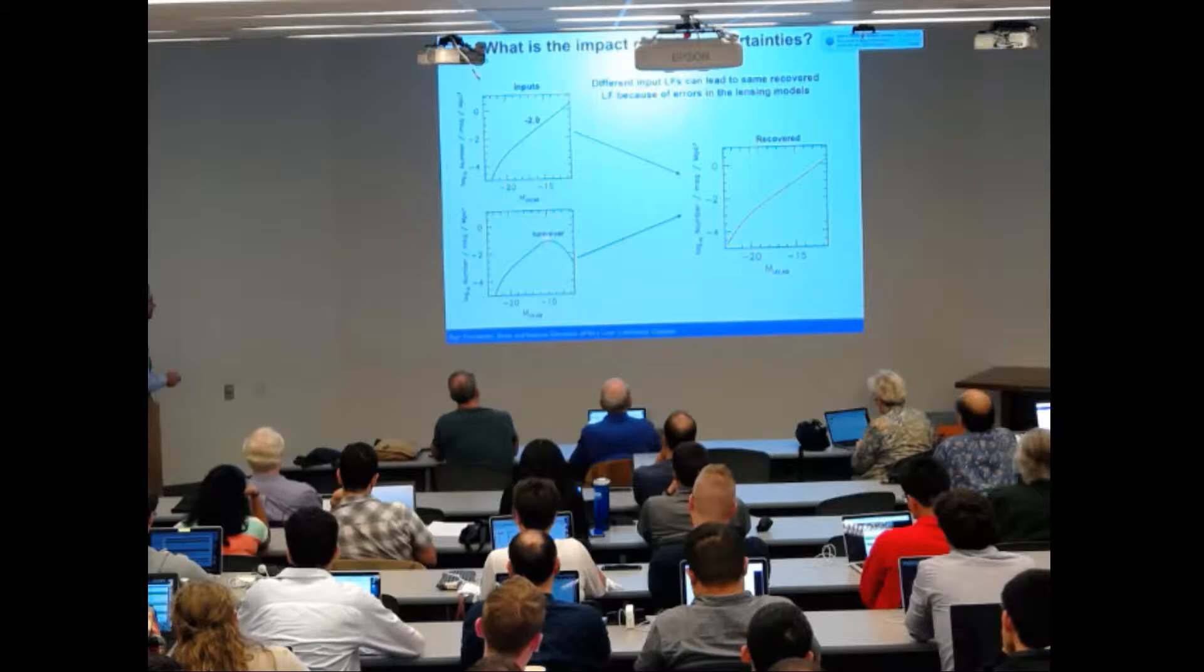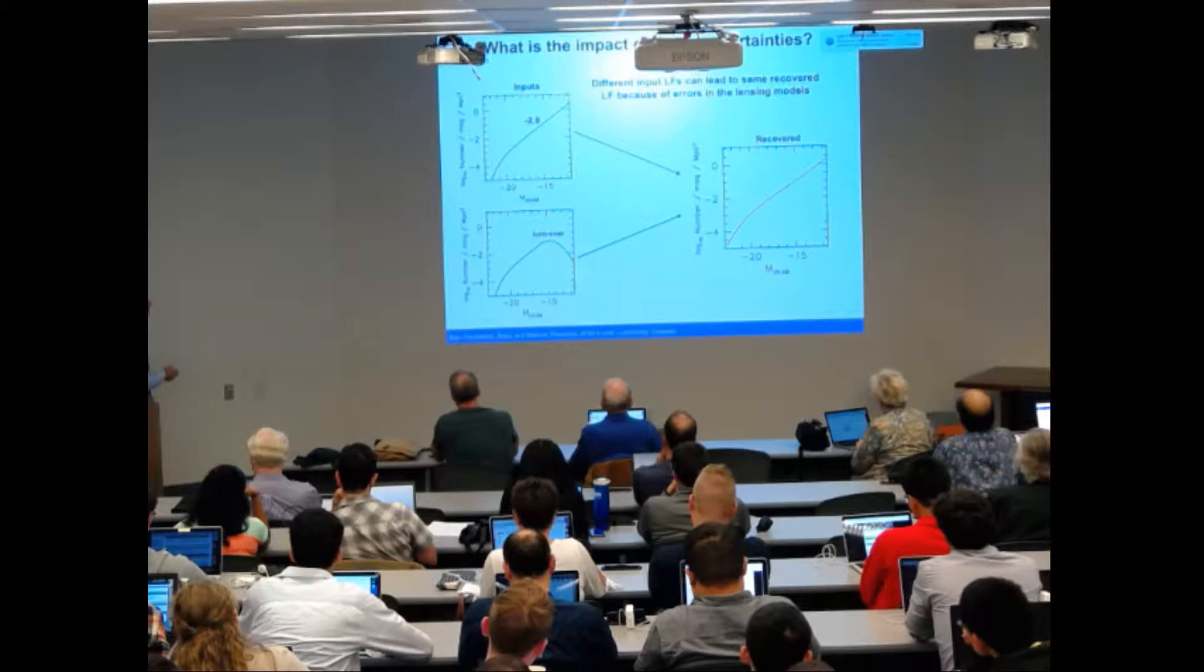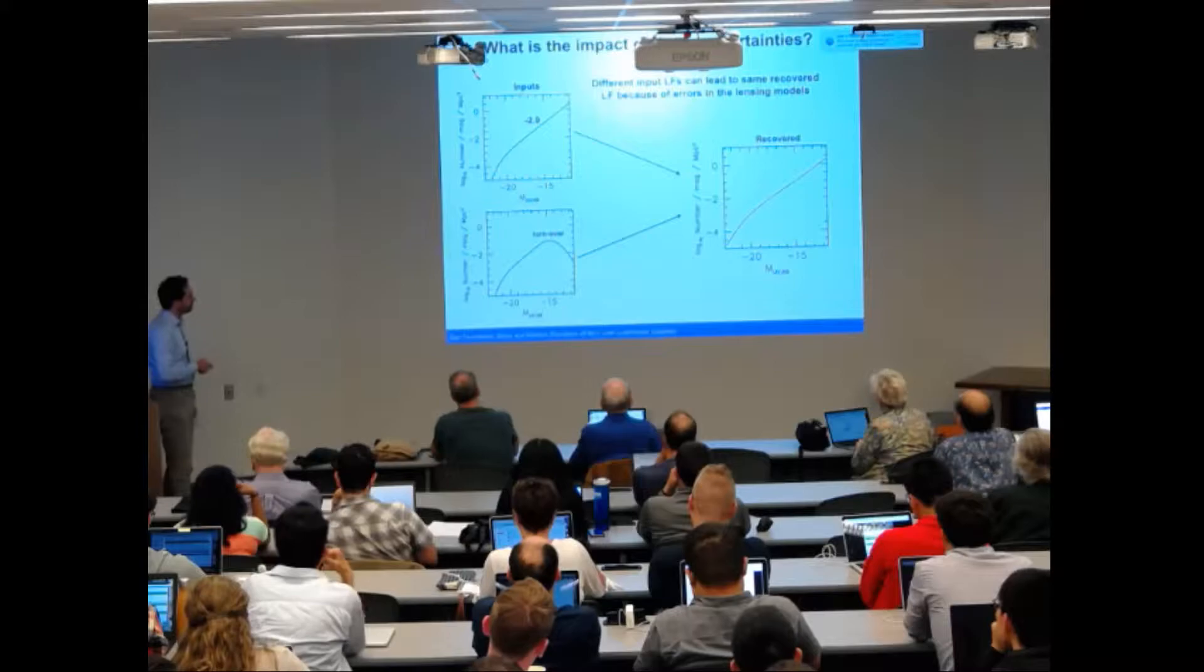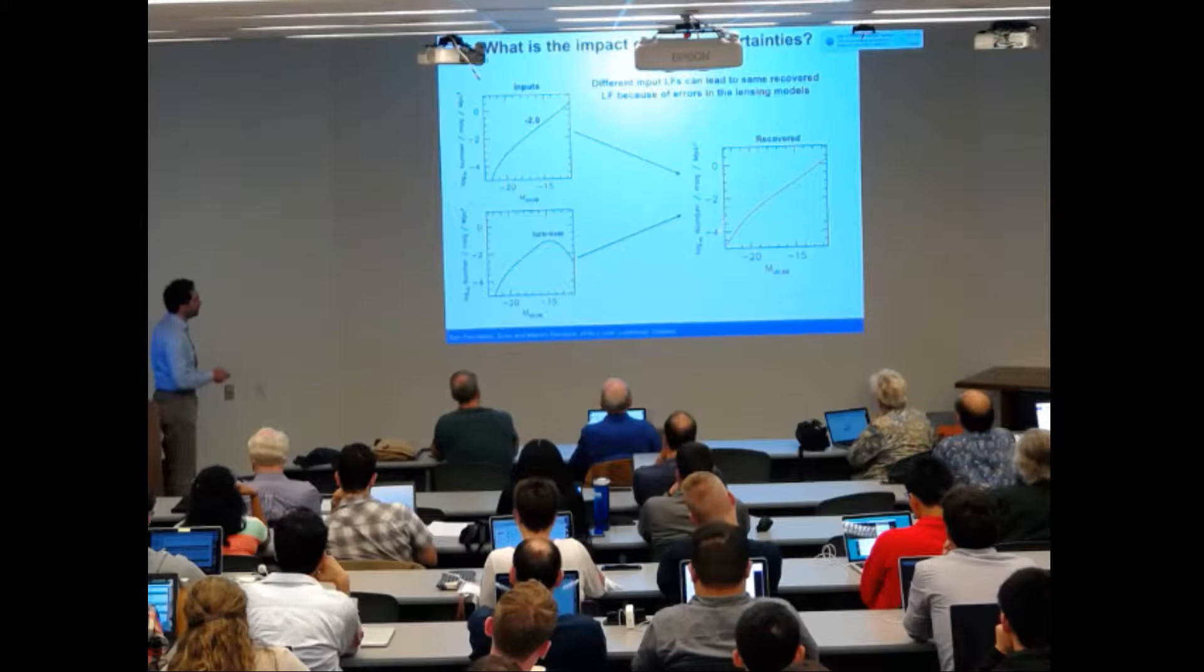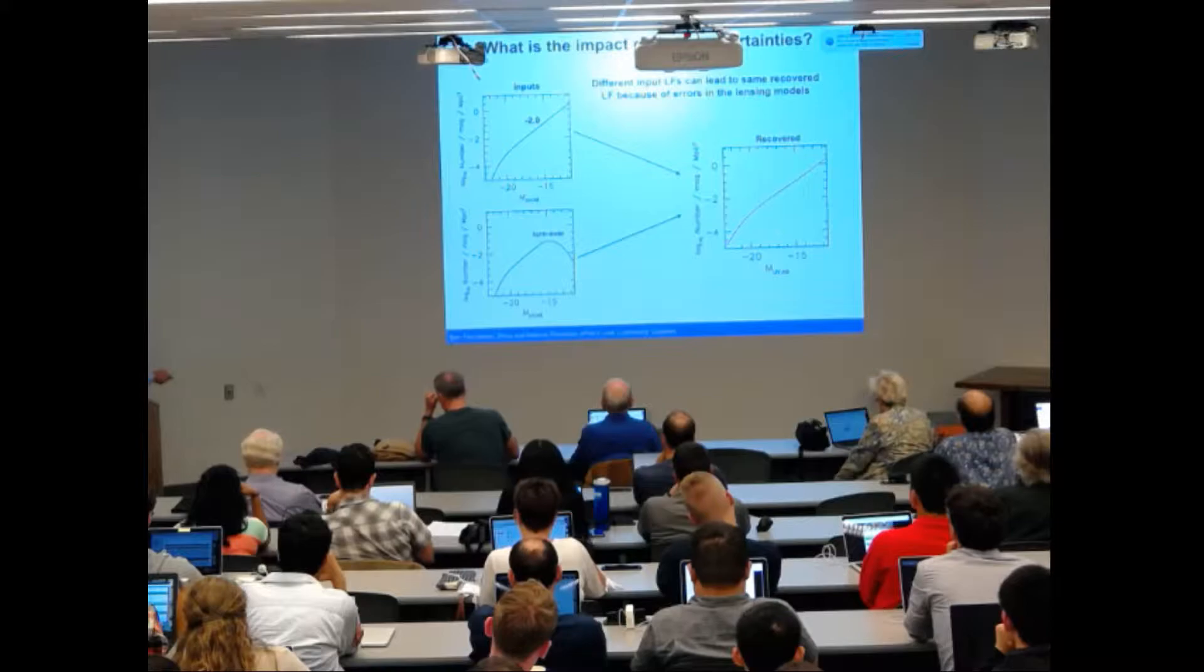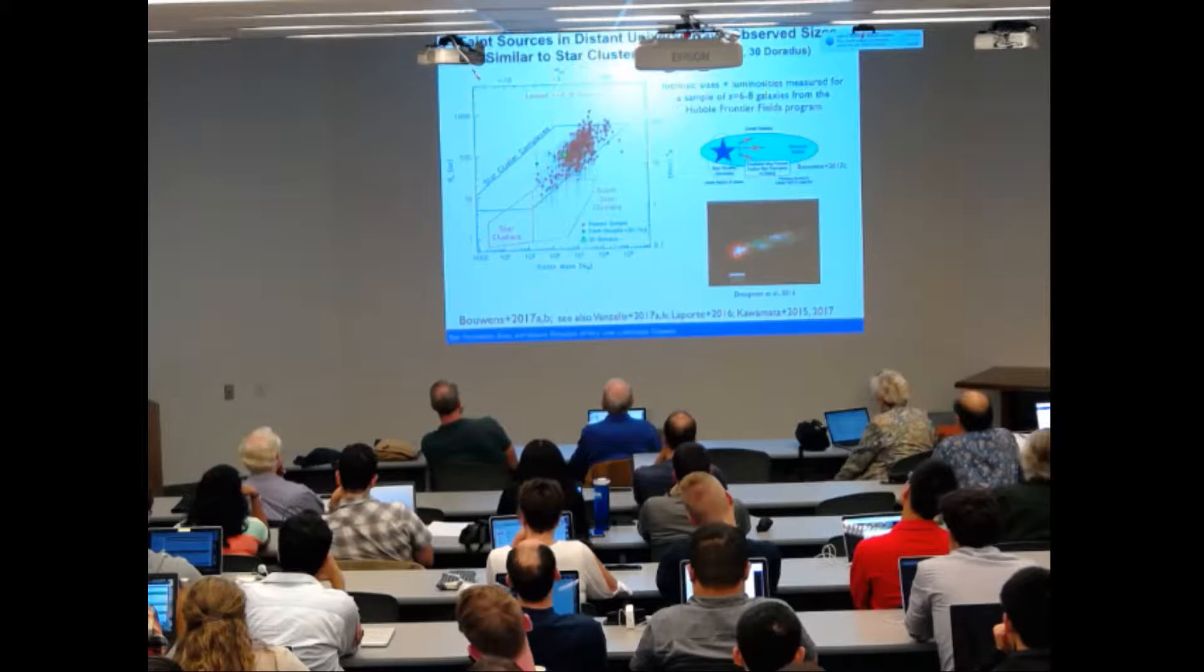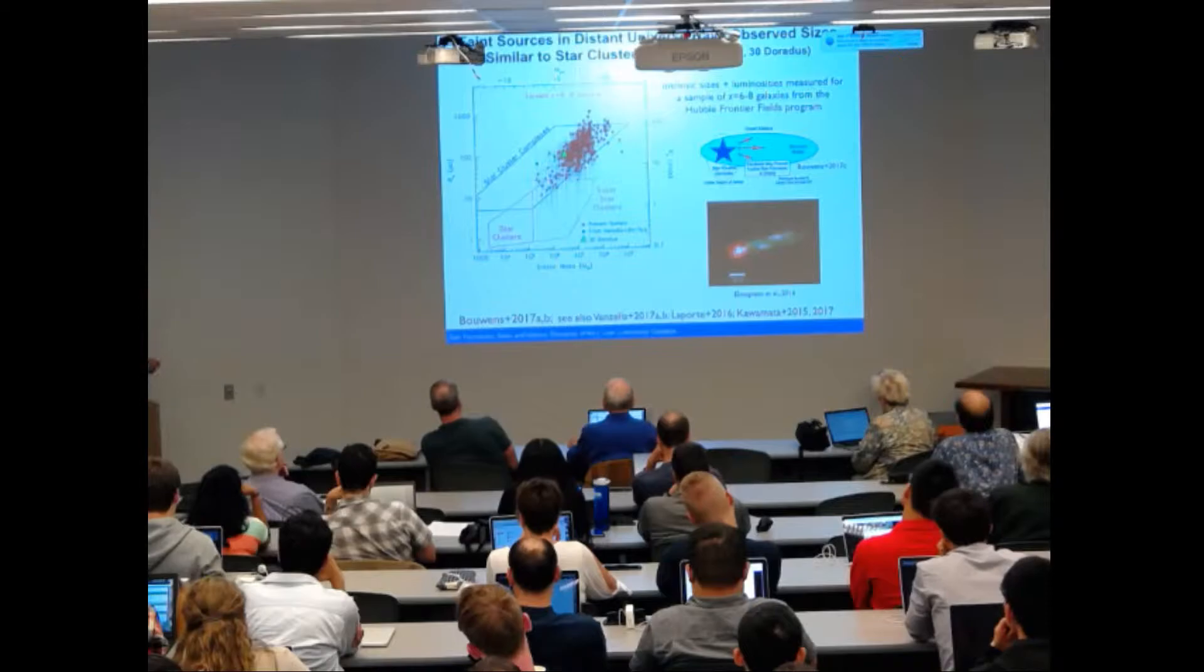So this can introduce strong systematics, and this is very dangerous when we try to recover the intrinsic luminosity function because systematics can hide turnover, for example, in the luminosity function. Here's just an example: two different input luminosity functions with different assumptions on the magnification map end up with a luminosity function with a faint end slope of minus two in both cases.